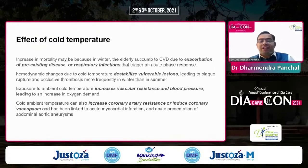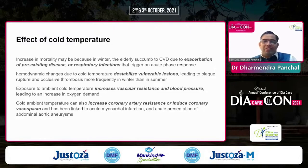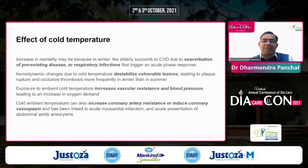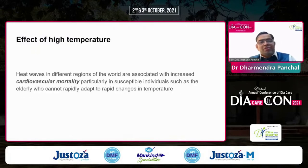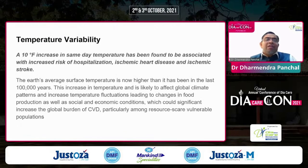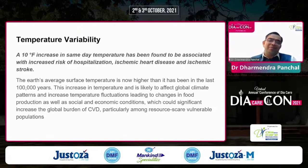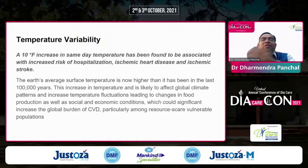Cold temperature exacerbates cardiovascular disease through exacerbation of pre-existing disease or respiratory infections that trigger acute phase responses. Cold may lead to destabilization of vulnerable lesions, causing plaque rupture or occlusive thrombosis more frequently in winter. Ambient cold temperature increases vascular resistance, blood pressure, and coronary artery resistance, and can induce coronary vasospasm — linked to myocardial infarction and acute presentation of aortic aneurysm. Conversely, heat waves are also associated with increased cardiovascular mortality. Even temperature variability — a 10-degree Fahrenheit increase on the same day — is associated with increased risk of hospitalization, ischemic heart disease, and ischemic stroke. Global warming is contributing to the growing global burden of cardiovascular disease.